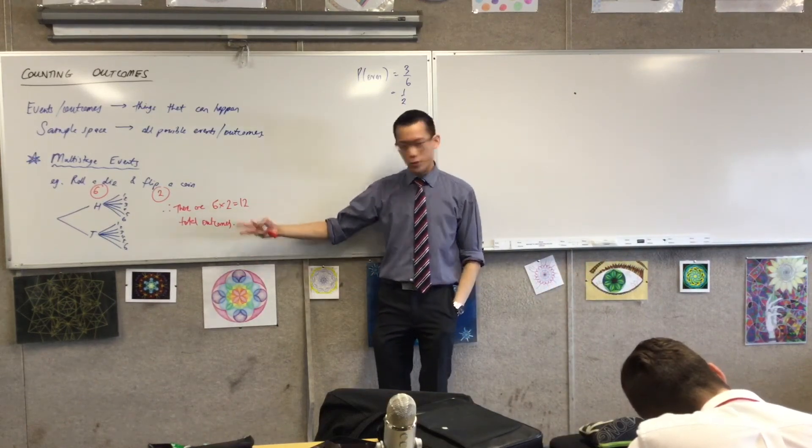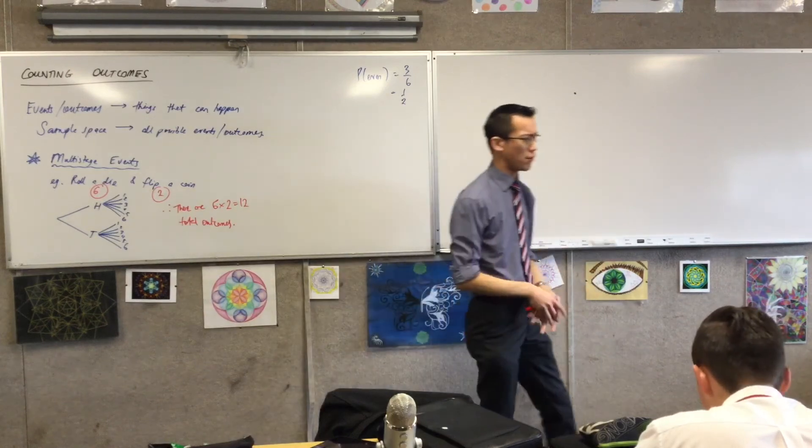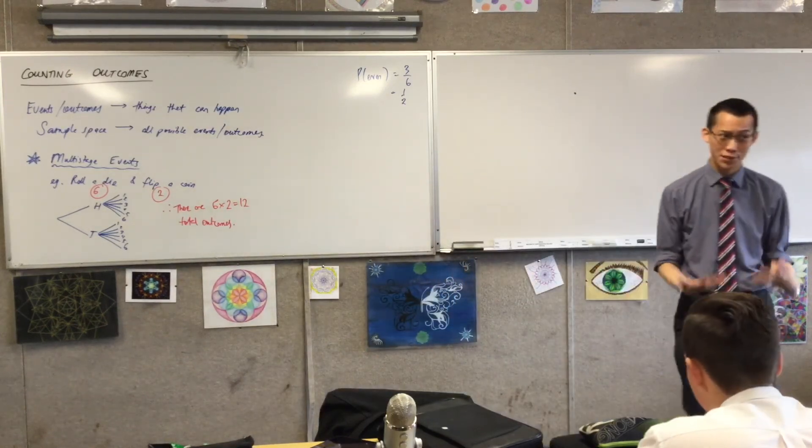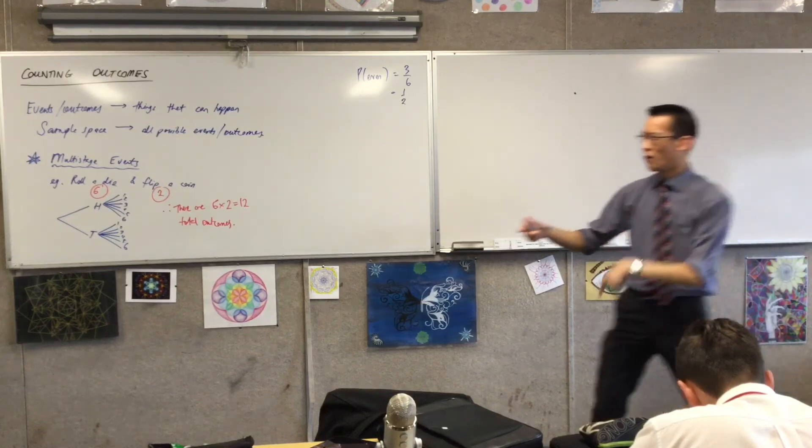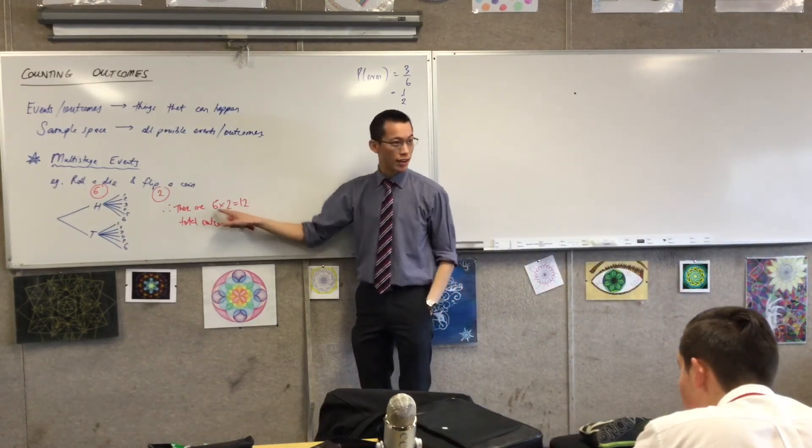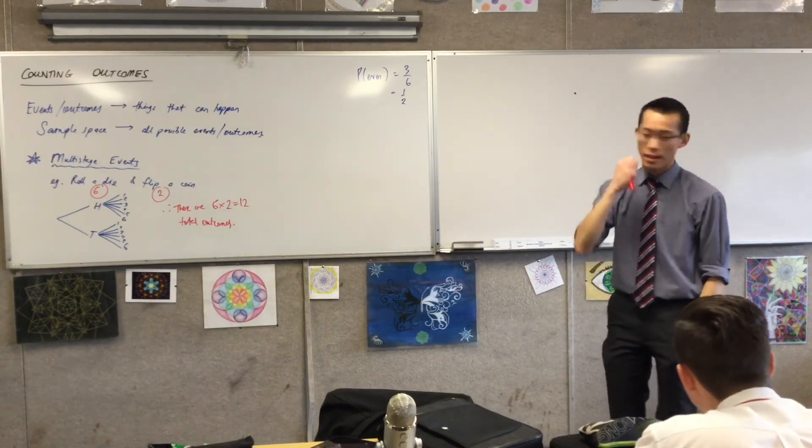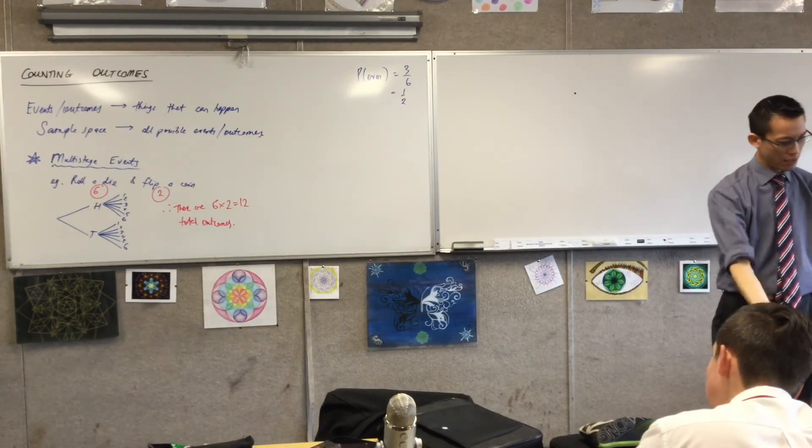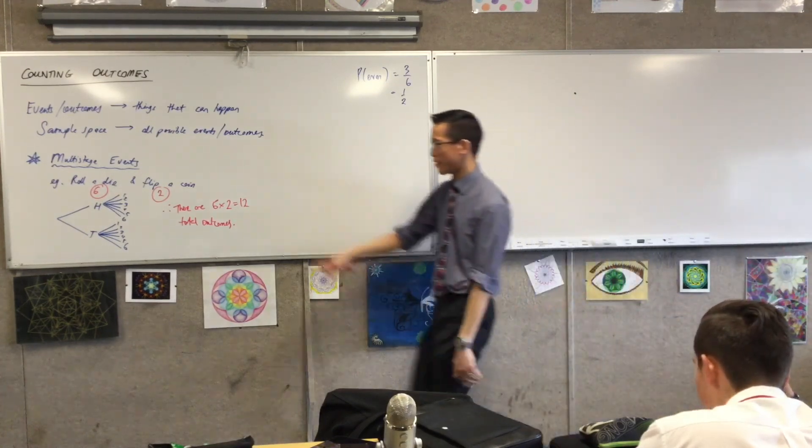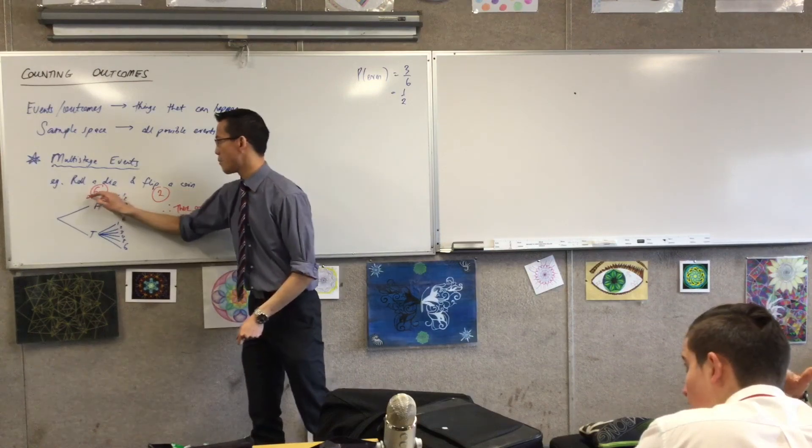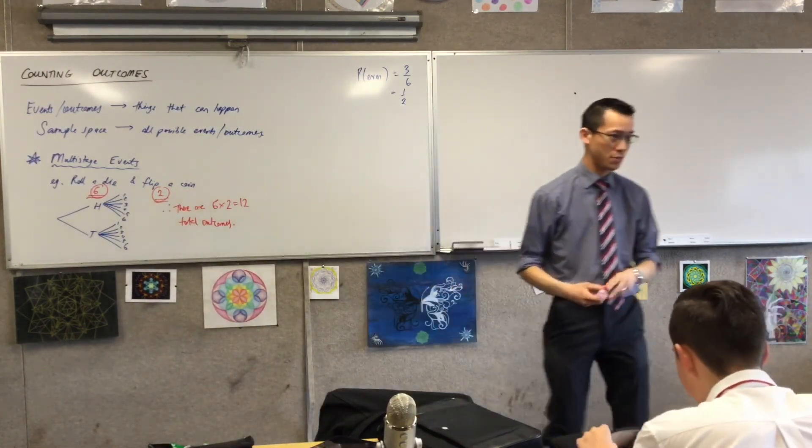Twelve total outcomes and you could use the tree diagram to list them out: head one, head two, head three, et cetera. Now as you can imagine, this becomes more and more useful the more outcomes there are and the more stages there are. You've got like five stages, you don't want to have to draw that tree diagram, you're going to be there till the sun sets. Okay, so therefore we can use this kind of little shortcut here to find out how many outcomes there are for any multi-stage event. Anytime you want to work out this total number, you just got to think about each of the stages and how many ways you can do each of those stages.